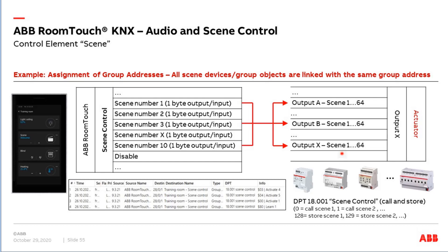In the group monitor you can see: I press a button and send 'Activate scene number 4', meaning call scene 4. Then activate number 5, number 1 — calling different scenes, but it's only one telegram and one group address. Depending on the value, different scenes are called. The last telegram shows I pressed long and sent the command 'Learn scene number 1' — store. Then all devices linked with the group address know they must now store their current value. The next time scene number 1 is called, they will recreate that same situation.